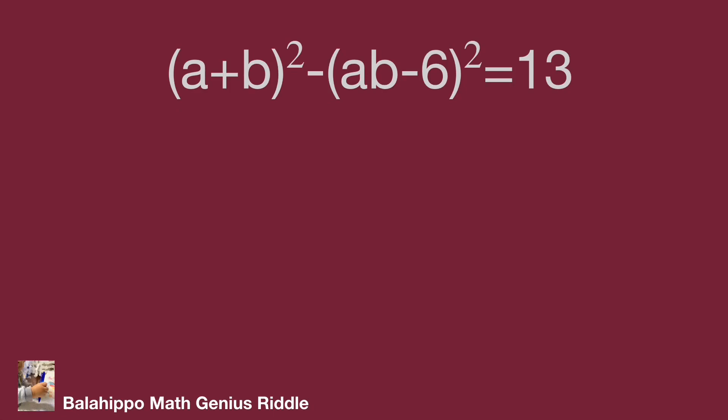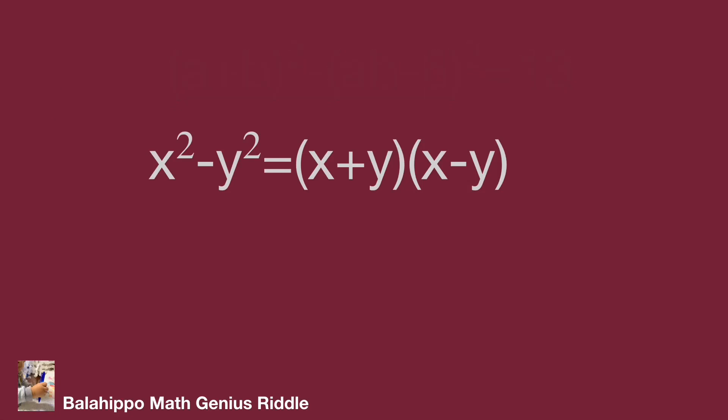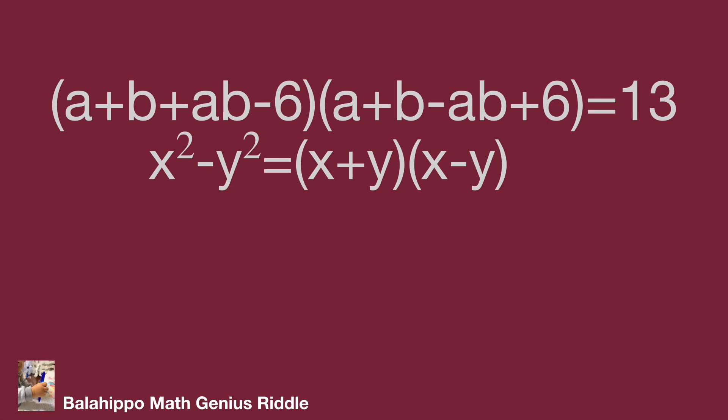We know, when factorizing x² - y² = (x + y)(x - y). Adopt the rule to the equation to become (a + b + ab - 6)(a + b - ab + 6) = 13.